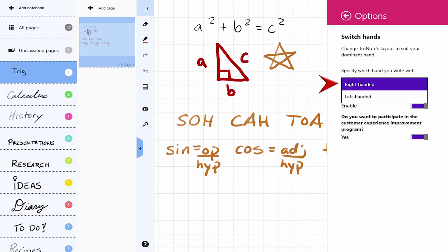You only have to do this once, unless you're ambidextrous. I'm right-handed, so I'll leave it as is, and just tap into TrueNote to close these options.